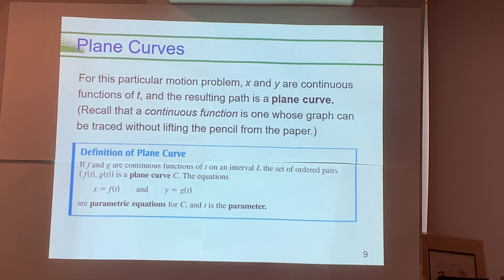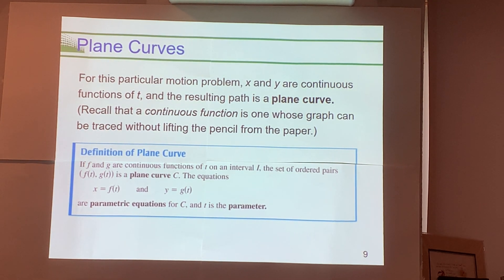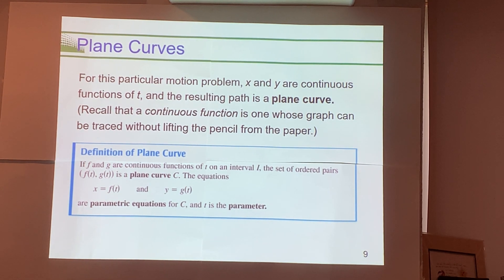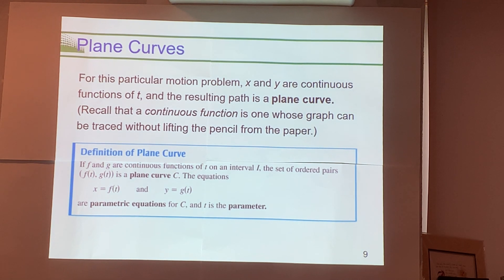x and y are continuous functions of t, and the resulting path is called a plane curve. If two functions are continuous on an interval, then the set of ordered pairs is the plane curve — that's how we graph this. We determine x by evaluating f(t) and y by evaluating g(t), then plot each ordered pair and indicate the direction on the curve. x(t) and y(t) — or f(t) and g(t) — are our parametric equations, and t is called the parameter.